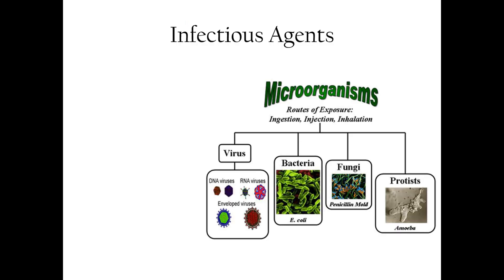Now let's talk about different infection agents to be aware of. Infection agents are microorganisms that can cause disease, and there are four main types. First, bacteria — these are single-celled organisms that can be helpful or harmful. Harmful bacteria like E. coli can cause infections and illnesses. Proper sterilization of equipment is crucial to prevent bacterial transmission.